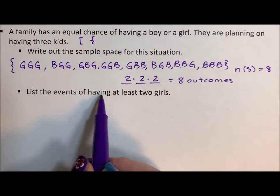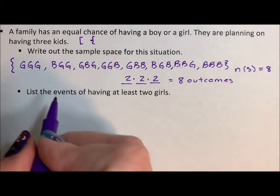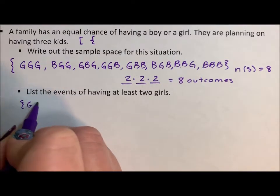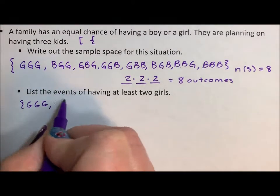List the events of having at least two girls, at least two girls. So that includes three girls, two girls, and two girls.